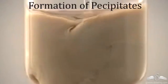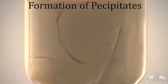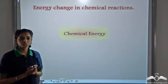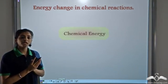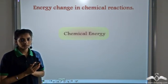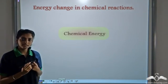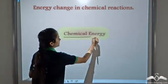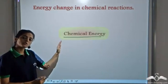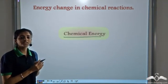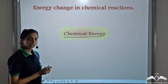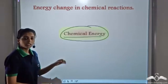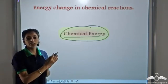So these are the changes that can be easily observed by us. There are also some changes associated with energy. When a chemical reaction takes place, there are some energy changes taking place as well. These energy changes taking place during a chemical reaction are known as chemical energy — the energy we associate with chemical reactions.